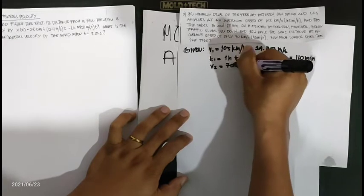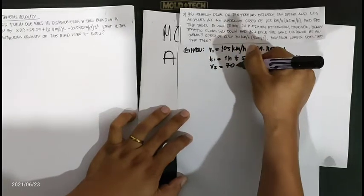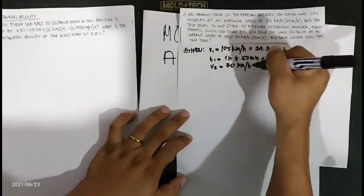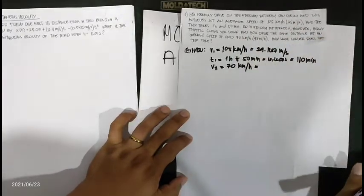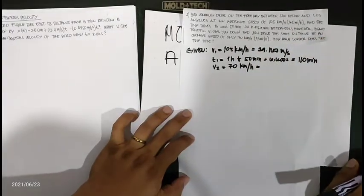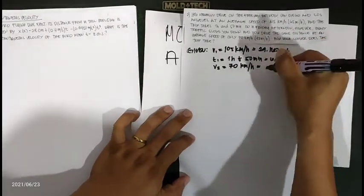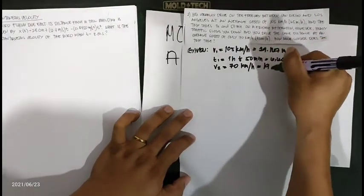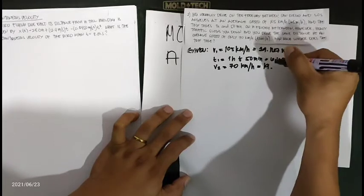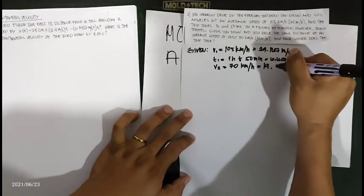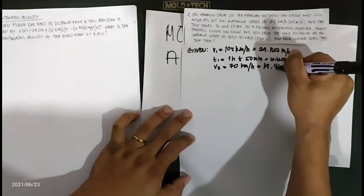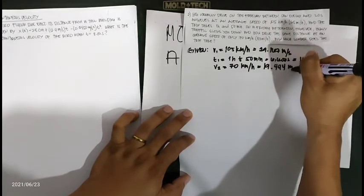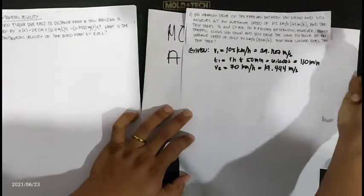The second velocity is 70 kilometers per hour — due to traffic, the speed is reduced. This converts to 19.444 meters per second.